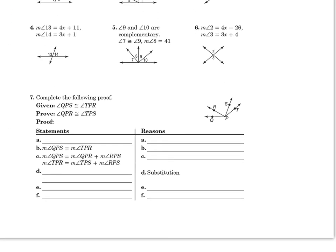Let's do this last proof together. We have angle QPS congruent to angle TPR, and we need to prove that angle QPR is congruent to angle TPS. This one gets a little more formal, so I'll explain the formalities the ones above didn't have. Statement 1: angle QPS is congruent to angle TPR — and this was given.